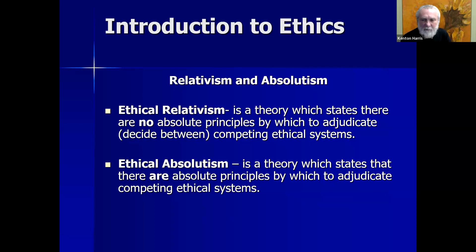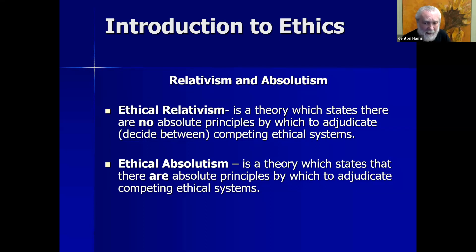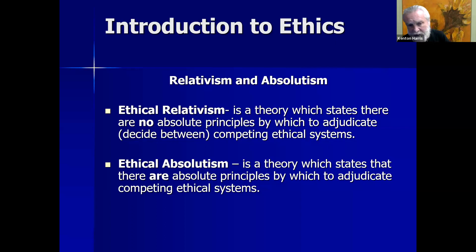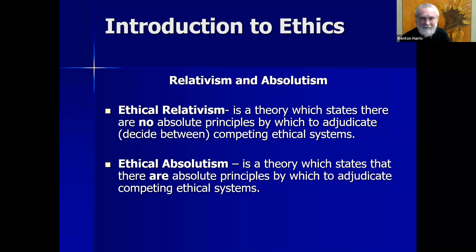Ethical relativism is a theory which states that there are no absolute principles by which to adjudicate — that is, decide between — competing ethical systems. Ethical absolutism, by contrast, is a theory which states that there are absolute principles by which to adjudicate competing ethical systems. As defined, they are diametrically opposed. One cannot be an ethical absolutist and an ethical relativist at the same time — the relativist is denying precisely what the absolutist is asserting. Either there are absolute principles or there are none.